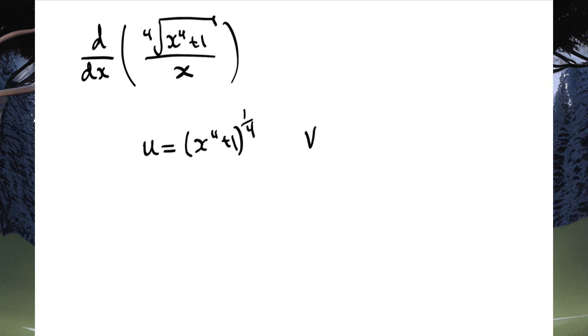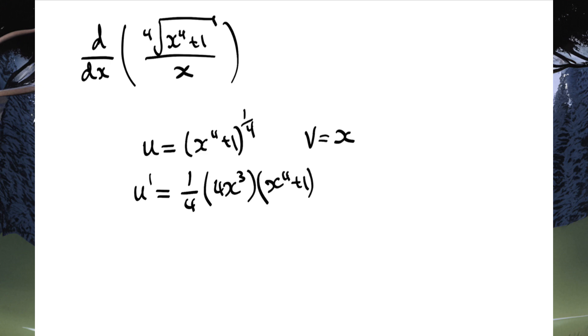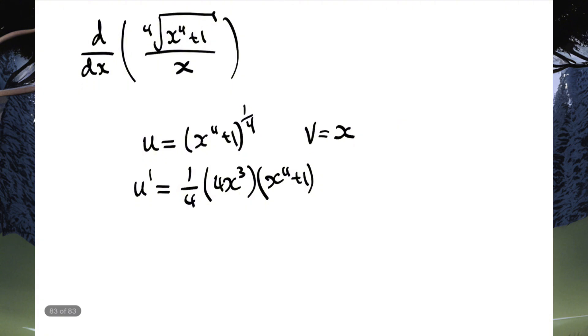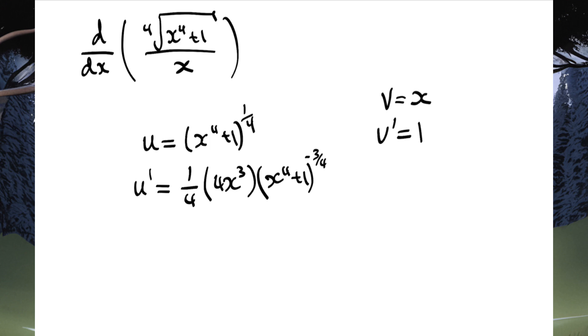Okay, so we've got this to differentiate. We're going to use the quotient rule because we've got two things being divided by each other. Our u here — for the quotient rule — is going to be x to the power of 4 plus 1 to the power of a quarter. And our v is going to be x. When we differentiate u, we get du, or u-dash, being a quarter times the derivative inside the brackets, which is 4x cubed, times by the brackets x to the power of 4 plus 1, with the power reduced to negative 3 over 4. Differentiating v, we get v-dash equals 1.